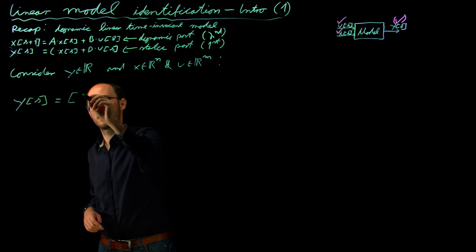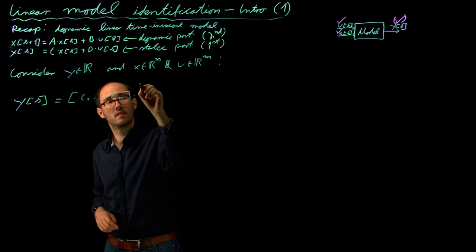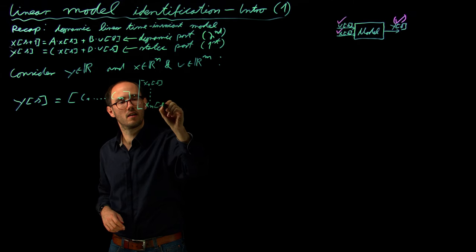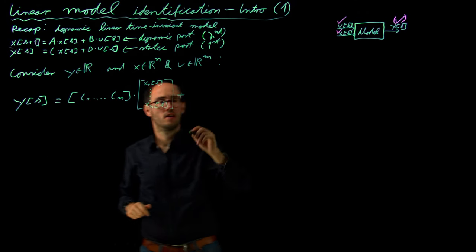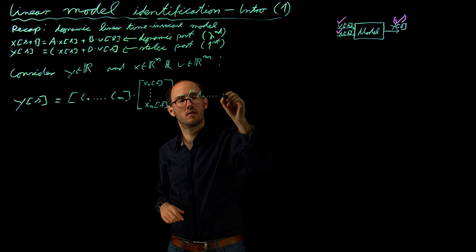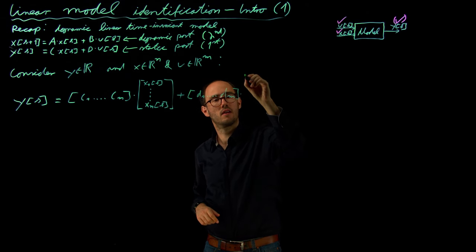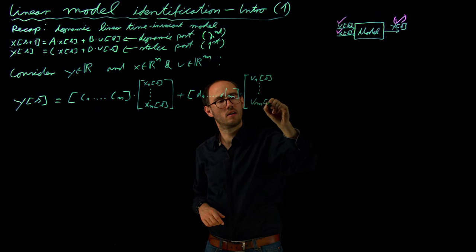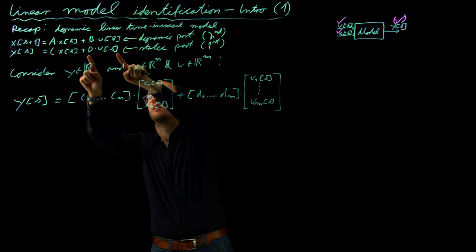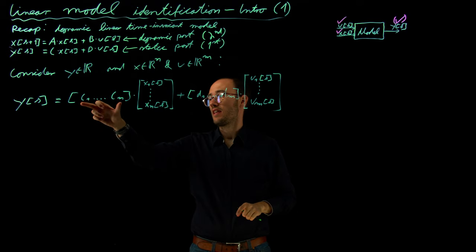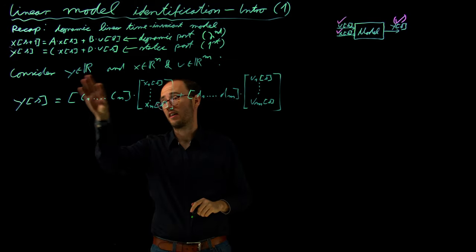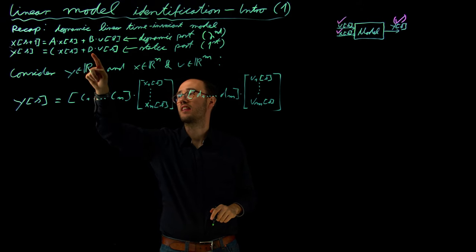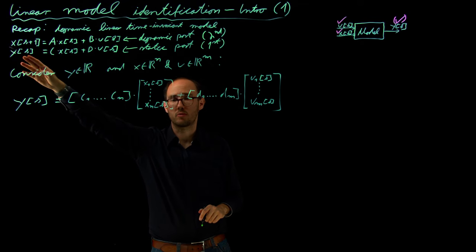Y(K) equals C1 to Cn times the column vector X1(K) to Xn(K) — that is the C part — plus D1 to DM times U1(K) to UM(K). The C vector is a row vector with N elements, and D is a row vector with M elements. These are the vectorial representations of C and D, which become vectors instead of matrices since we have a scalar output.